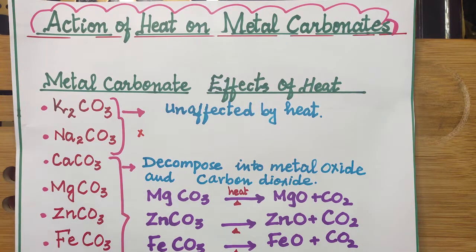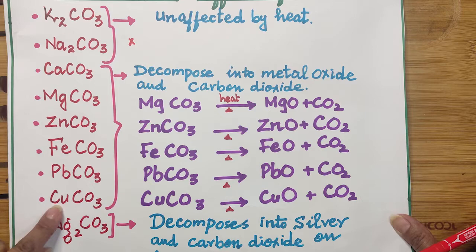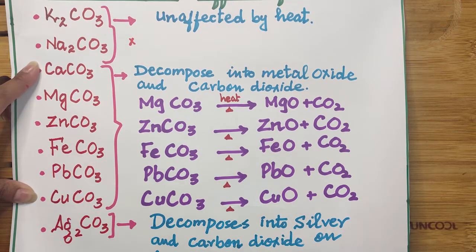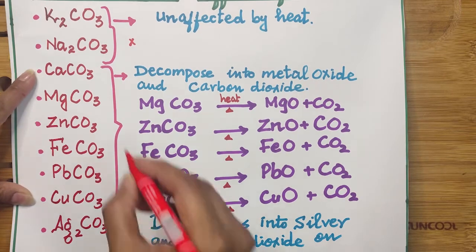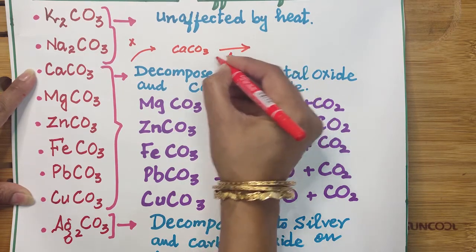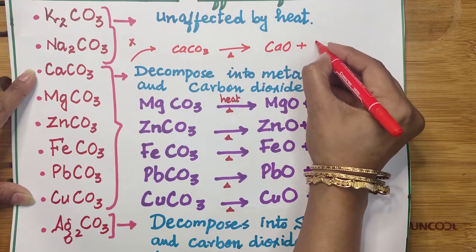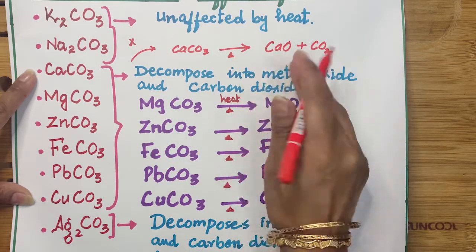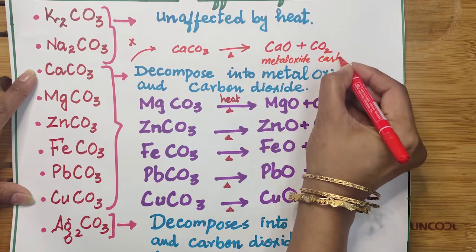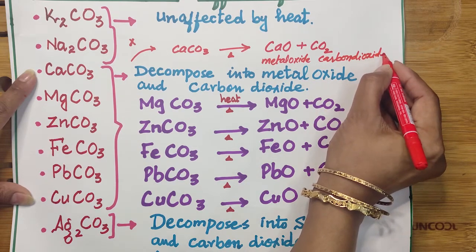When we talk about calcium carbonate, magnesium carbonate, zinc carbonate, iron carbonate, lead carbonate, tin, and copper carbonate — all of these carbonates behave similarly when we provide heat. Heating calcium carbonate causes thermal decomposition — 'therm' means heat. When this compound is broken down into its components by heat, this is called thermal decomposition. This compound decomposes into two parts: metal oxides and carbon dioxide gas.